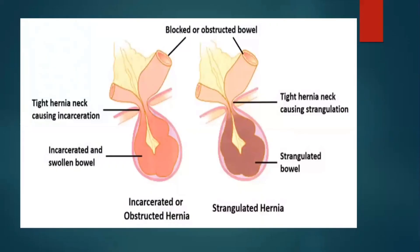This image shows strangulated hernia. Strangulated obstruction occurs due to compromised blood supply leading to bowel ischemia. The patient develops fever, leukocytosis, tenderness, rebound tenderness, and signs of peritoneal irritation.